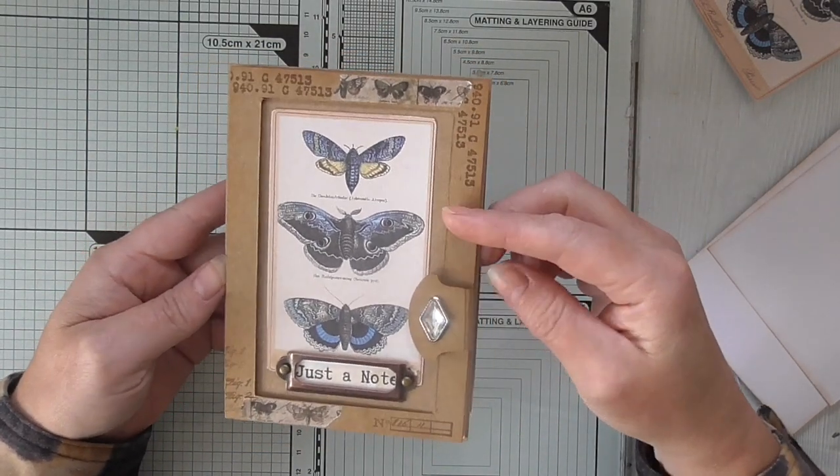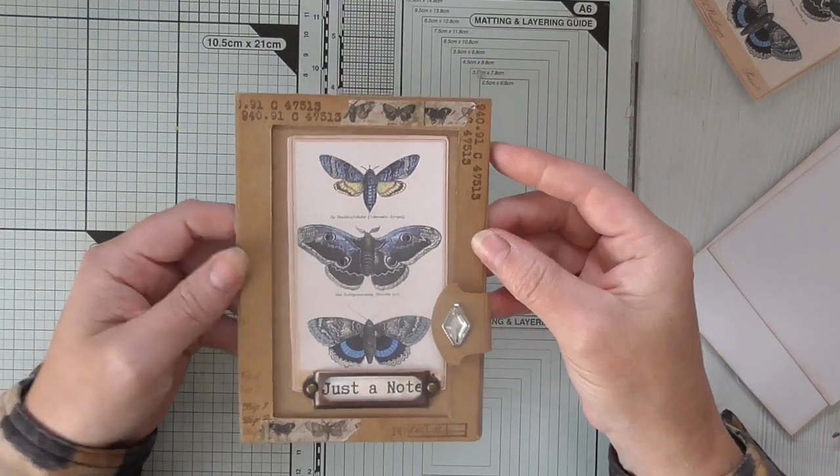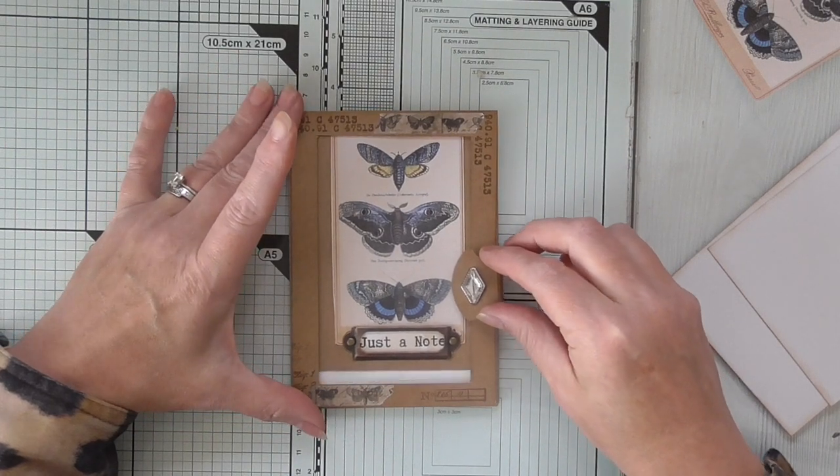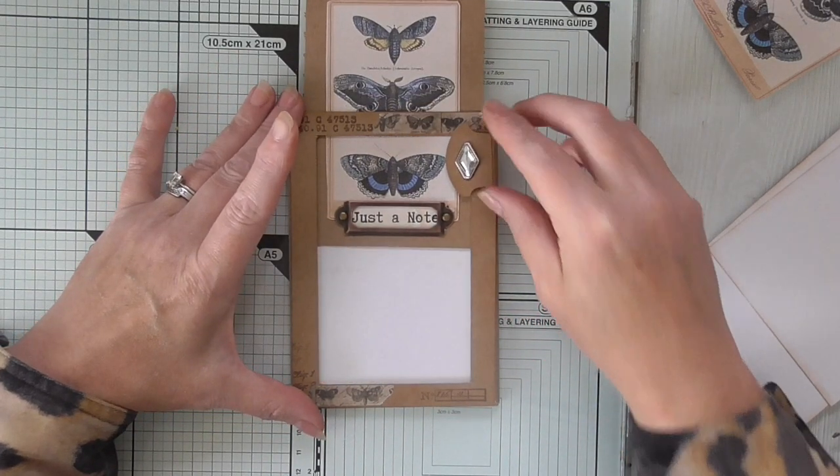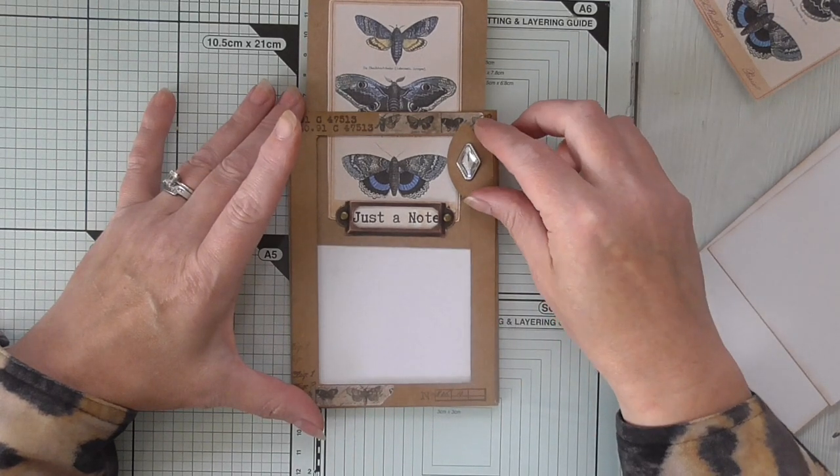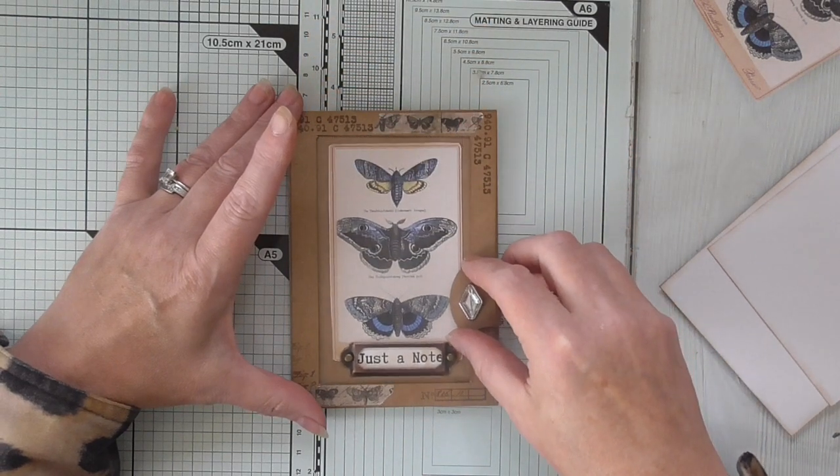So it's a standard UK size card, there we go, tenfold, but it's just got a little added slide and reveal. So this section here slides to reveal a little section where you can write a hidden message or note, and then it will slide back down.